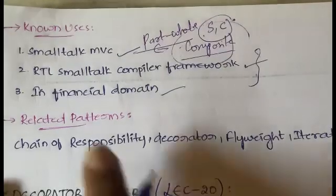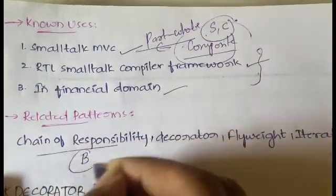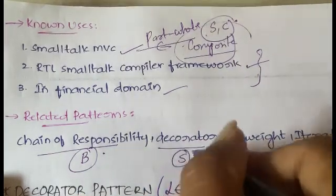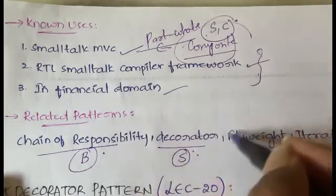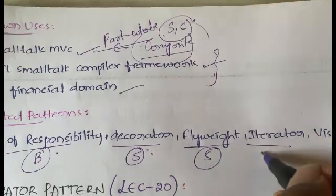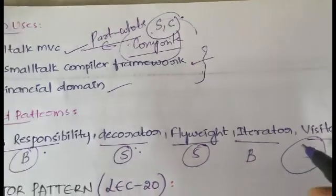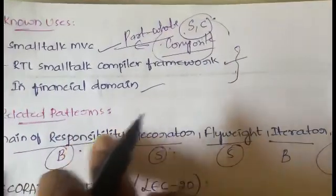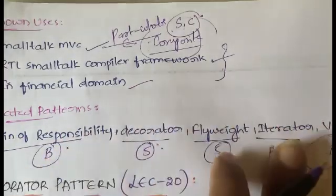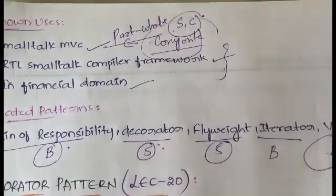The related patterns are: Chain of Responsibility (a behavioral design pattern), Decorator (a structural pattern, covered in the next video), Flyweight (also structural), Iterator (behavioral), and Visitor (also behavioral). Once you learn each of these patterns, you will understand how they relate to the Composite design pattern.